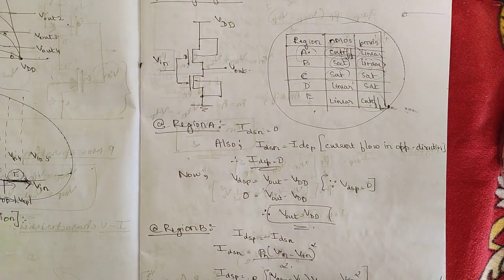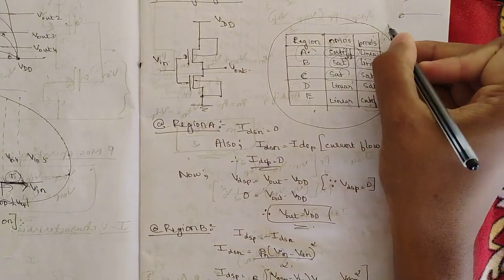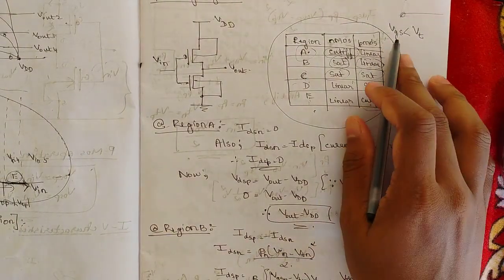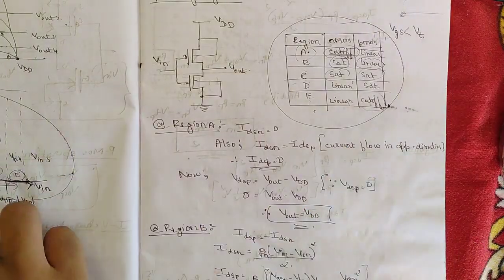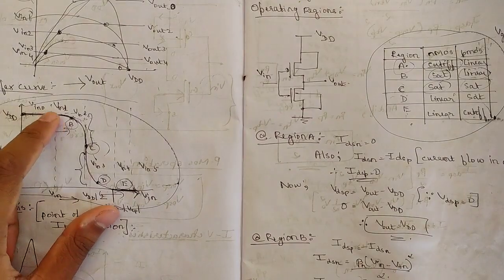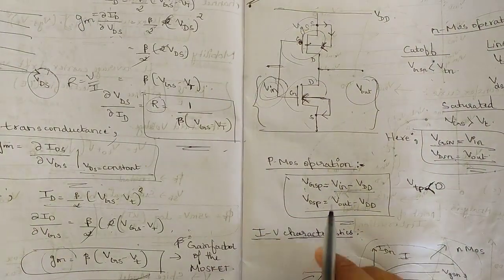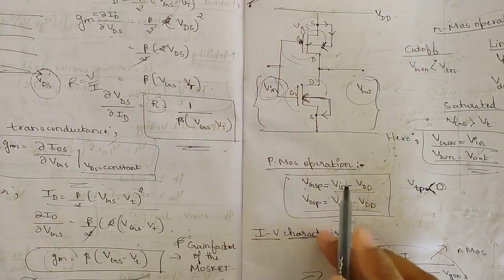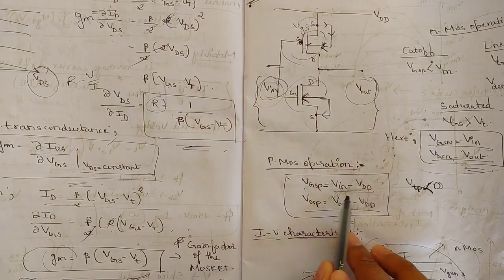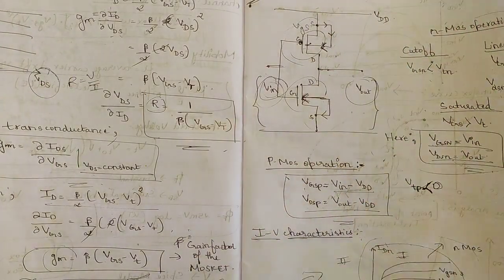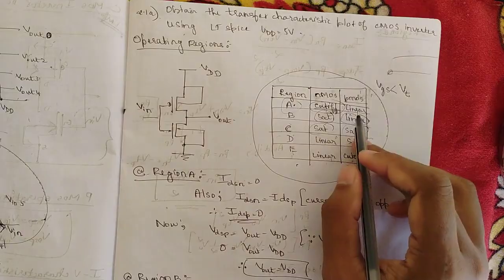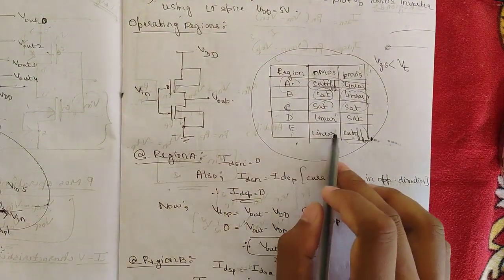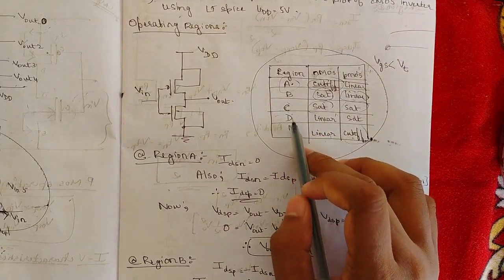PMOS is in linear region in region A because VGSP = VIN − VDD, and when VGS < VT the linear condition is satisfied. In region B, the NMOS transistor is in saturation and the PMOS transistor is in linear region. In region D, which is inverse to B, the NMOS is in linear region and the PMOS is in saturation.